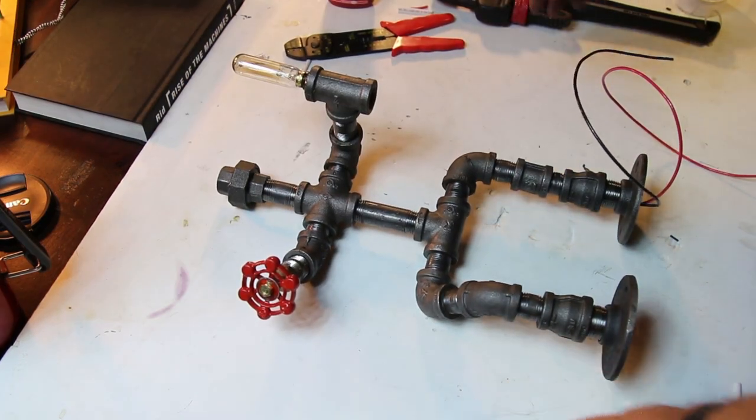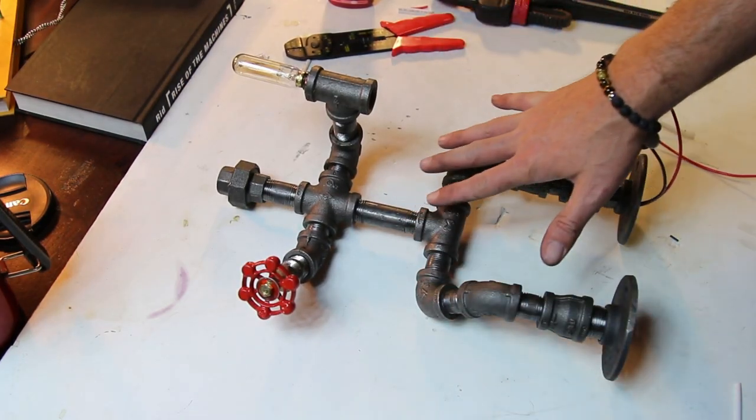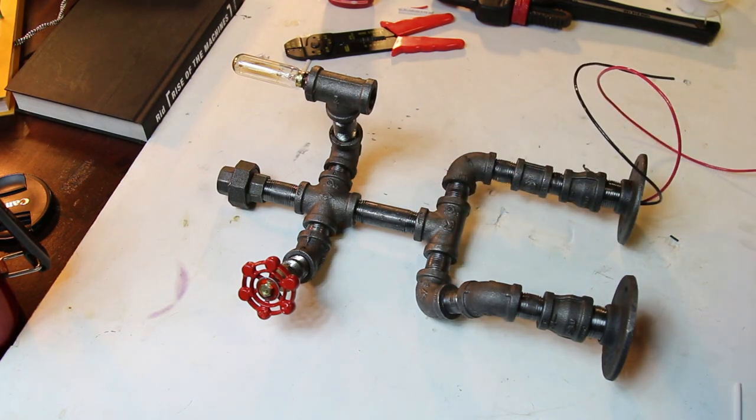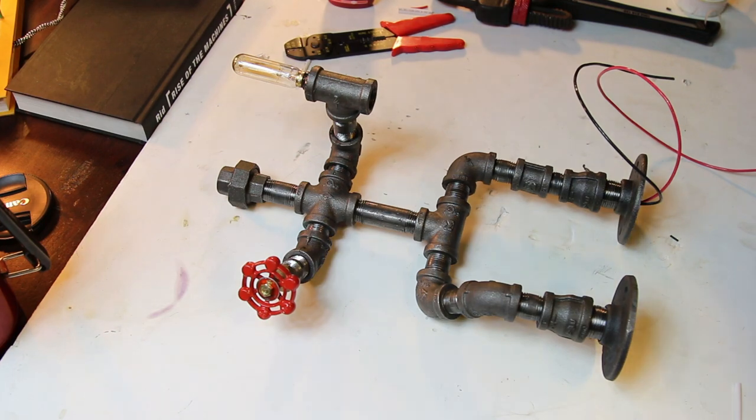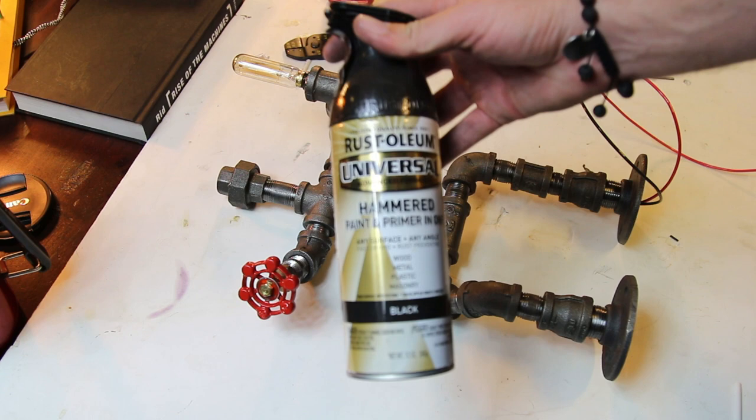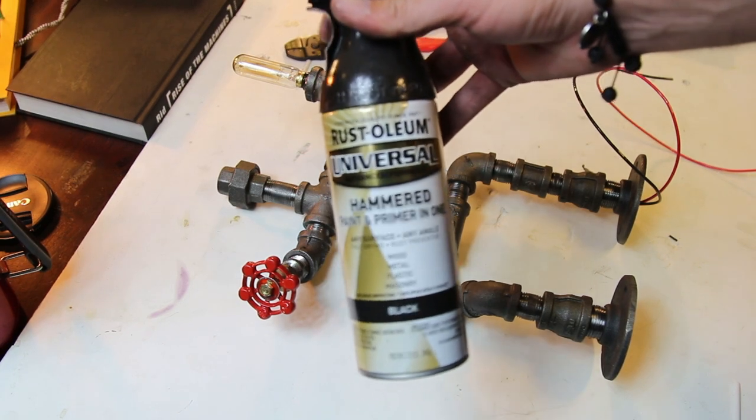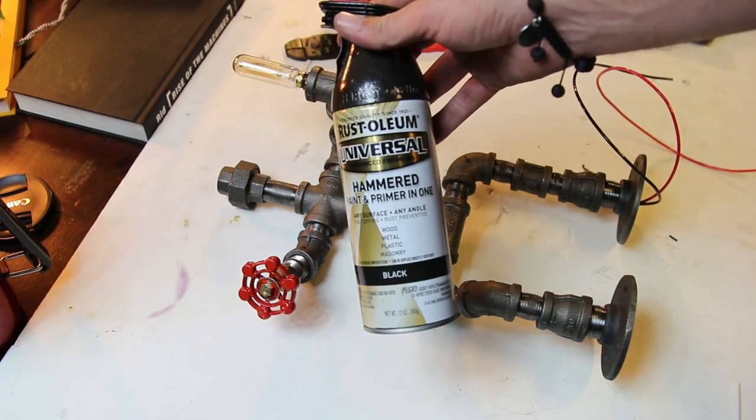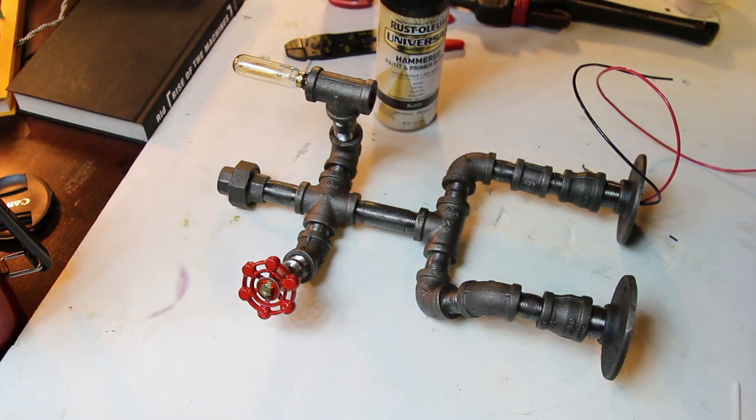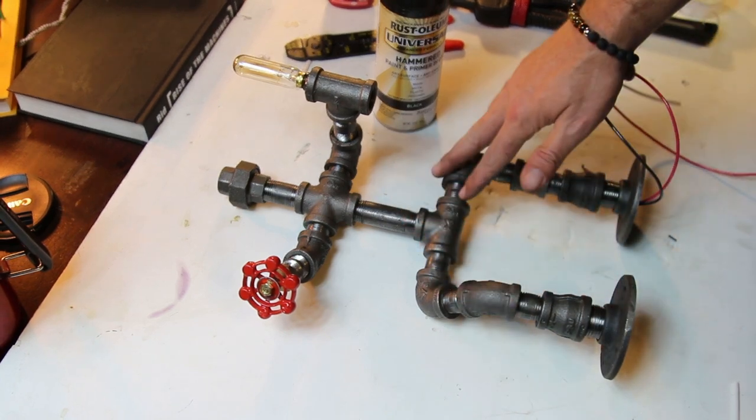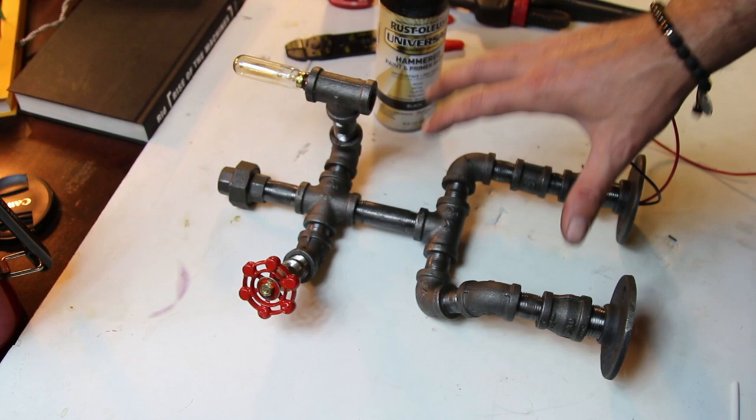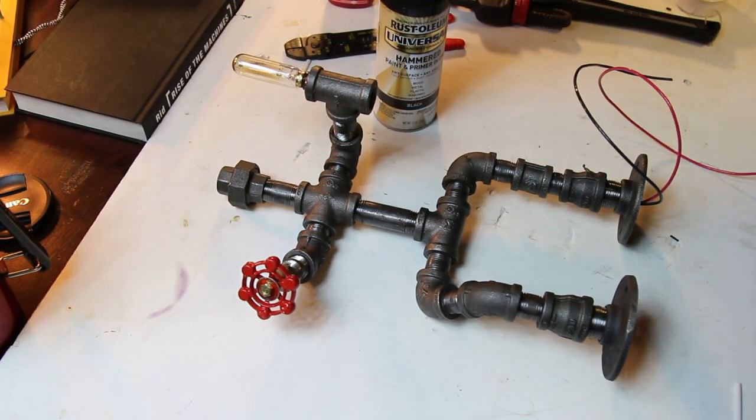So now that we have our robot completed, what I want to do on this particular one is I want to paint it a hammered black. So I'm a big fan of this Rustoleum Universal Hammer paint and primer all in one. Works really good. Gives these, when it's all said and done, you'll see how this looks - looks really nice. Gives it that kind of not a bright shiny look, but a little bit weathered and rugged kind of a look to it. This has been one of my favorites as far as the paints that I've used.